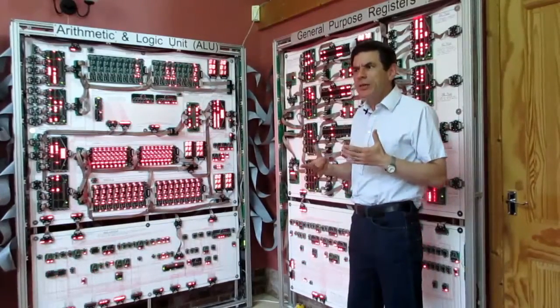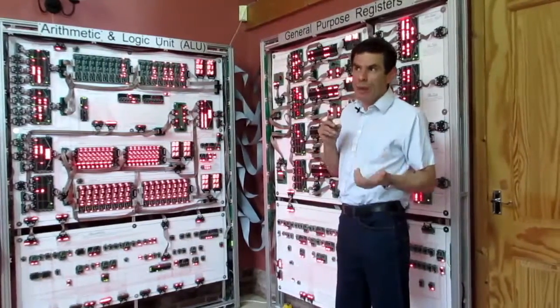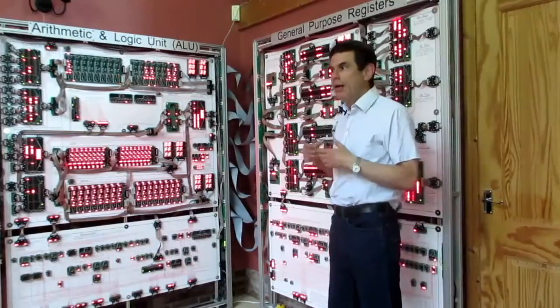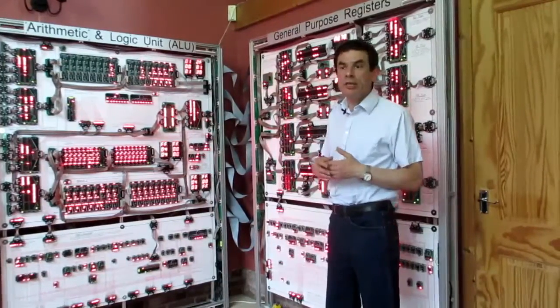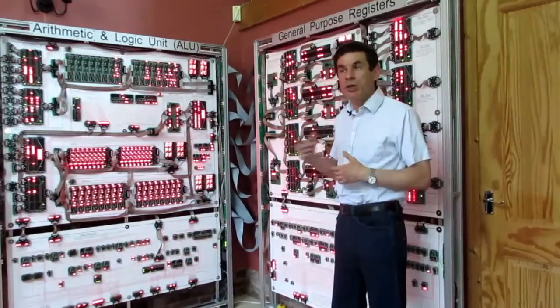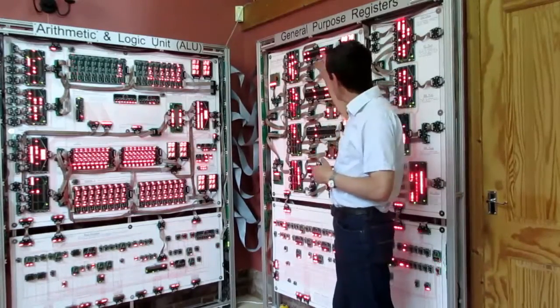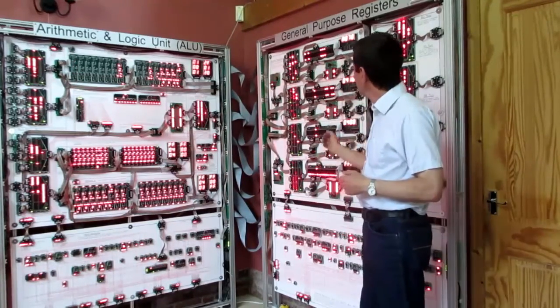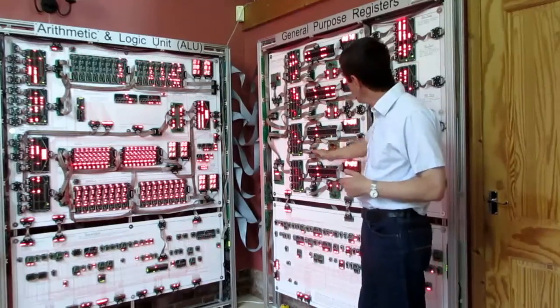In a megaprocessor there are several functional blocks. One example is the registers, which act as a scratch pad and carry out calculations. These are the registers for the megaprocessor - we've got four of them here.